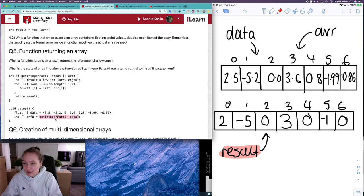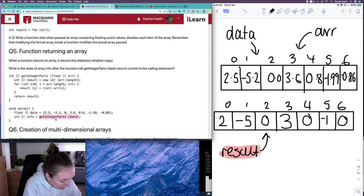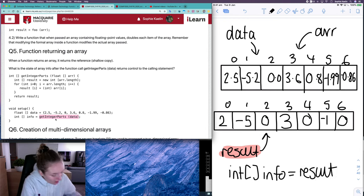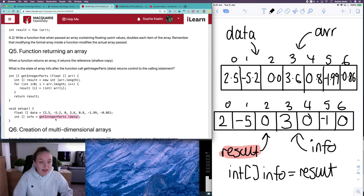So result is being returned here. So that is the equivalent of saying int array info is equal to result. And because both info and result are integer arrays, we know that that means a shallow copy, not a deep copy. So what's happening here is we now have a reference to that same place in memory here, but its name is info.